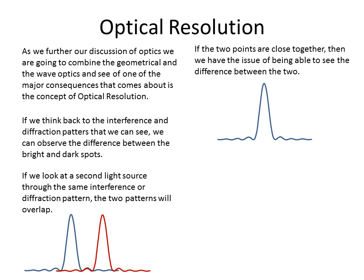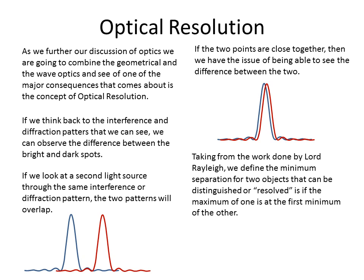If they're close together, when we bring them closer together, their interference patterns are going to get closer together. This is almost when they're on top of each other. This is something we want to be careful about, because there was work done by Lord Rayleigh who defined that in order to see the difference between two points — two objects — and to distinguish the difference between the two, which we call being resolved, is when the maximum of one is at the first minimum of the other.